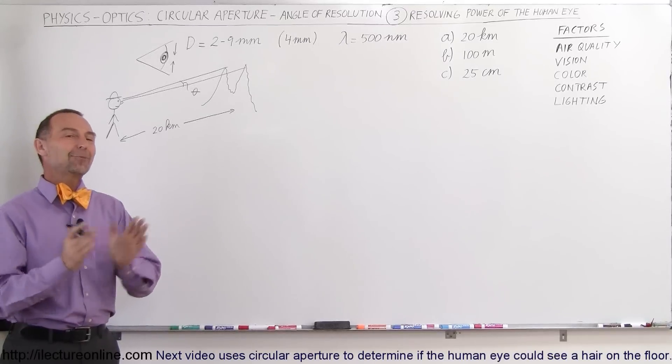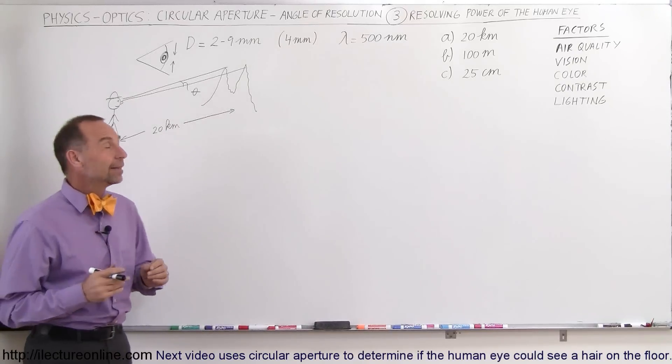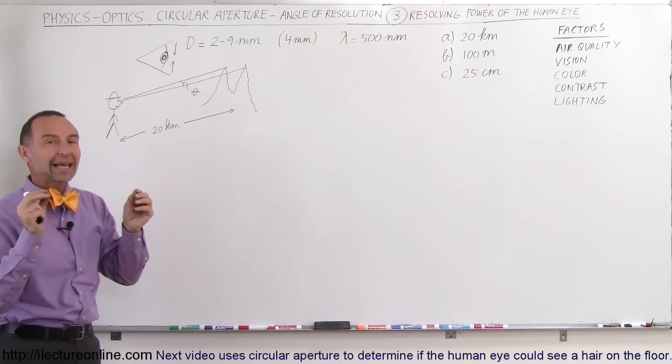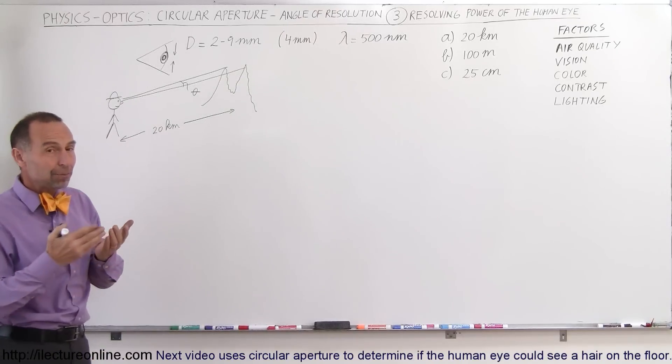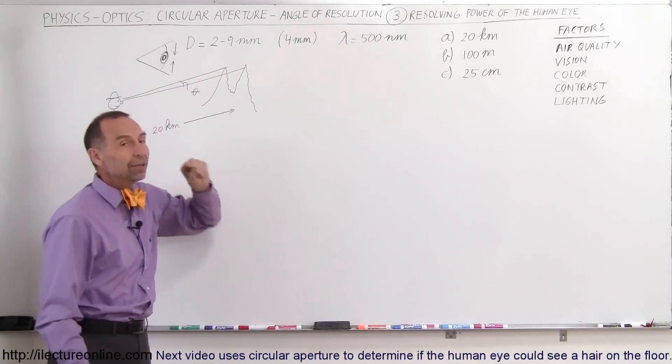Hey, welcome to ElectronLine and now we're going to talk about the resolution ability of the human eye. The human eye is built such that we have a pupil that can dilate and shrink depending upon the lighting conditions. For typical people, the diameter of the pupil can be anywhere from 2 to 9 millimeters.